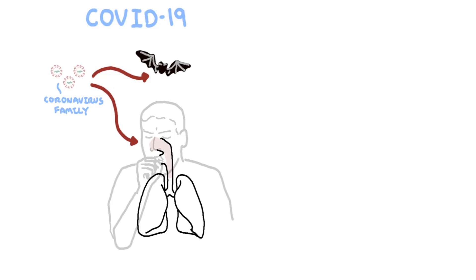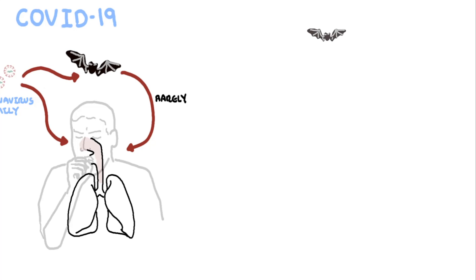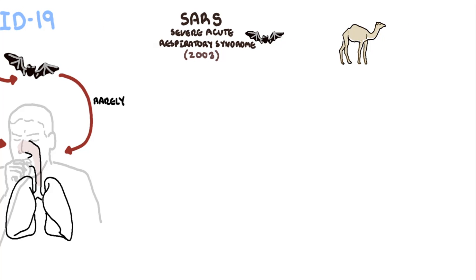Rarely, the coronaviruses that infect animals can evolve and become a new coronavirus which then infect and spread between people. Important examples include severe acute respiratory syndrome coronavirus, or SARS, in 2003, and the Middle East Respiratory Syndrome coronavirus, also known as MERS.